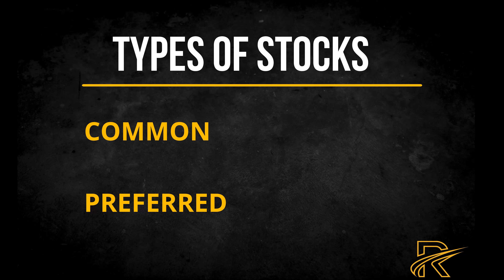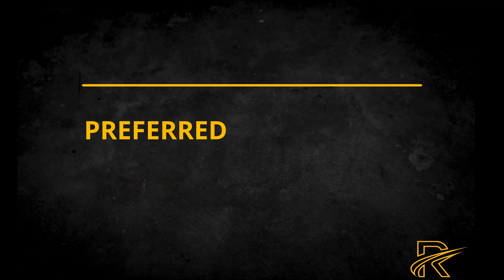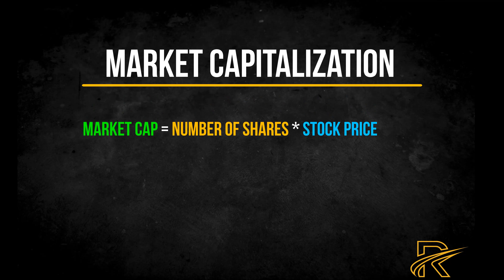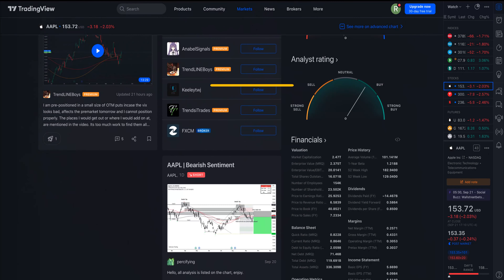The second type is preferred stock. As mentioned earlier, the majority of public companies have common stock, but some issue shares of what's called preferred stock. This type of stock offers some of the advantages of both common stocks and bonds in a single security. Preferred stocks pay shareholders guaranteed dividends, in addition to a chance for price appreciation like you get with common stock.